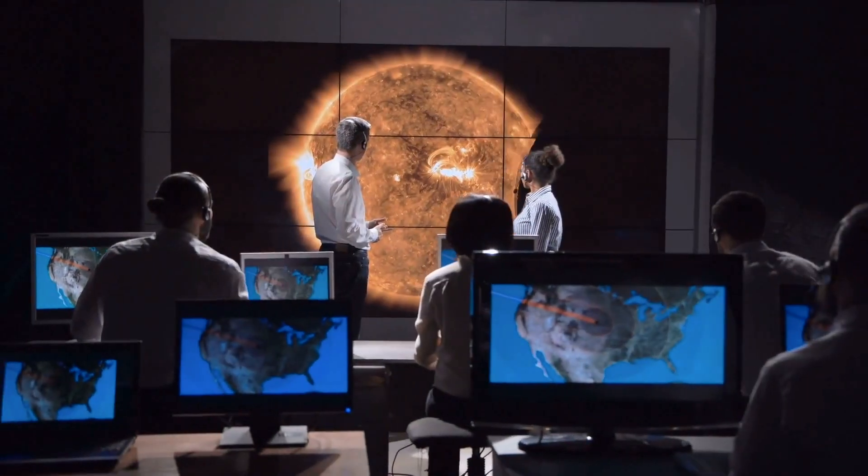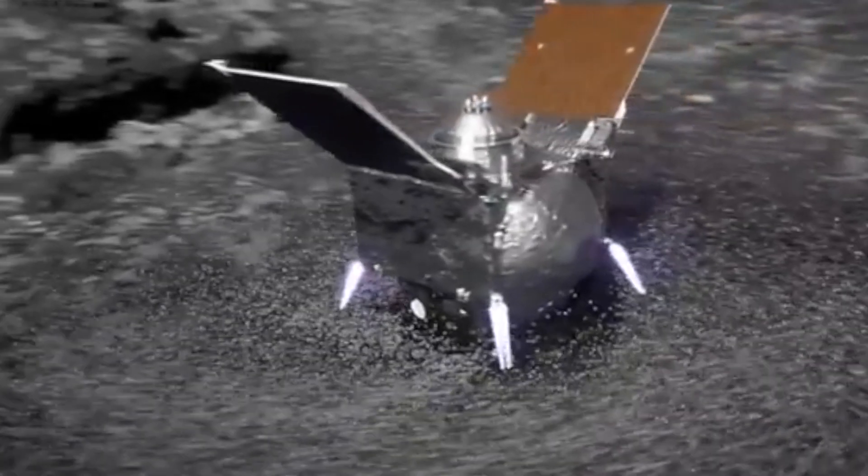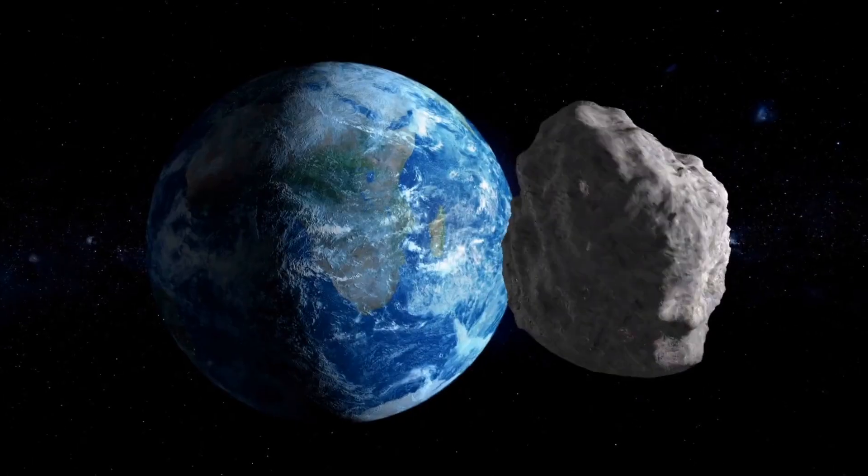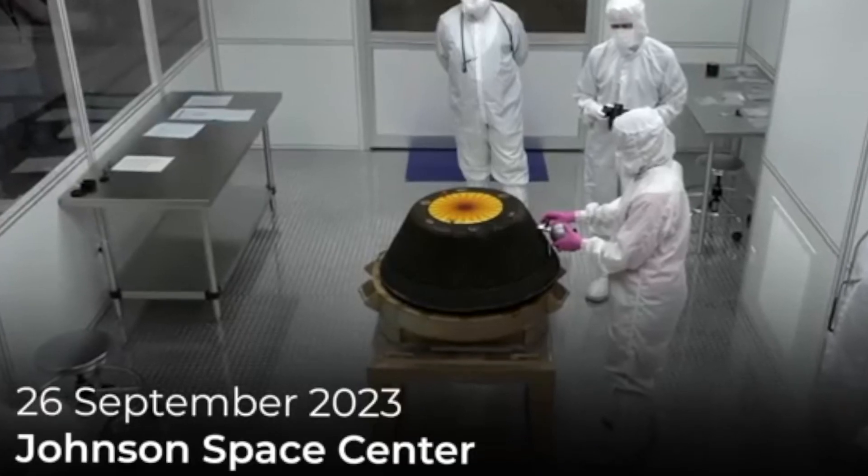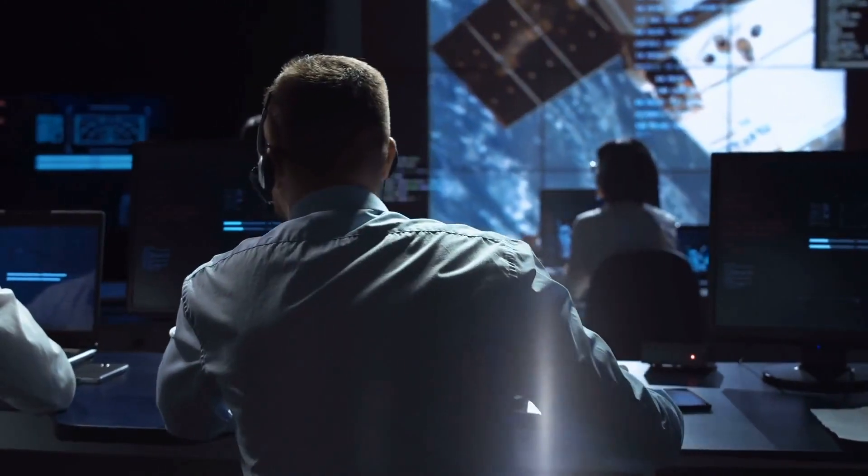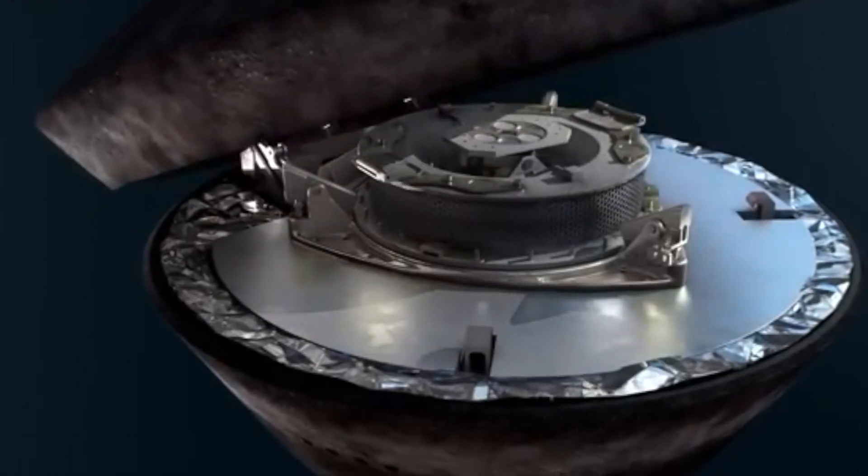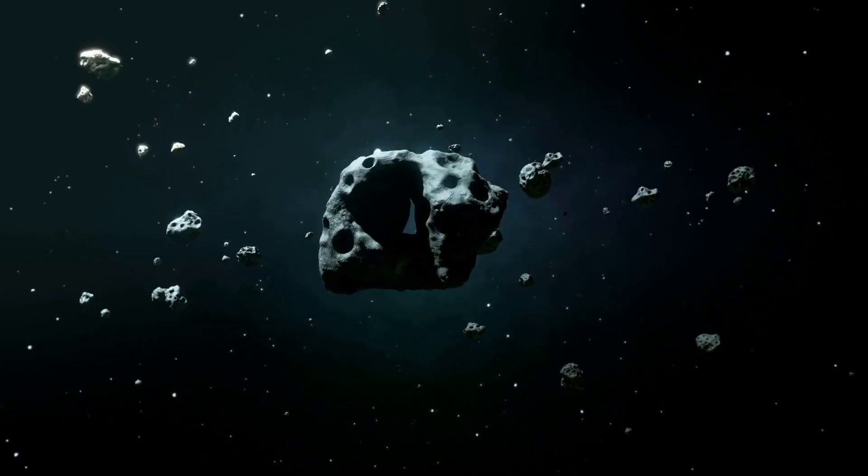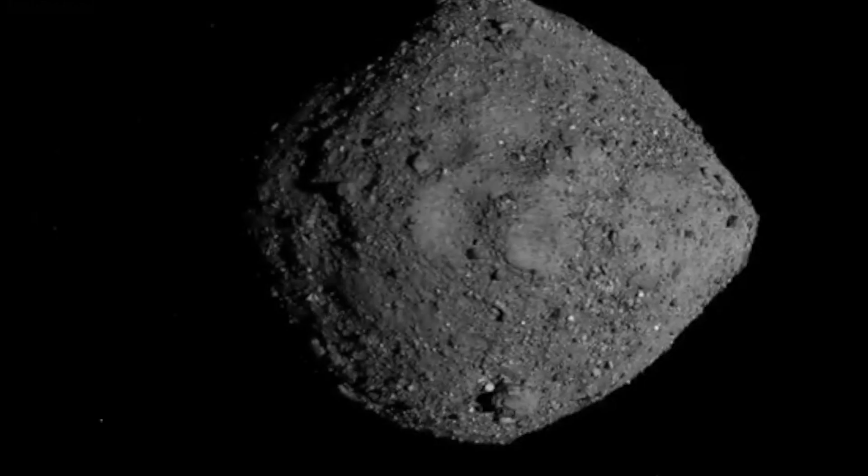NASA has successfully unlocked the space capsule housing the largest ever collection of asteroid samples obtained during a space mission. These valuable samples were retrieved from Bennu, an asteroid with potential hazards, and they offer a unique glimpse into the early solar system. On September 26, 2023, scientists at NASA's Johnson Space Center in Houston made a pivotal discovery when they opened the sample return canister from the OSIRIS-REx mission. This mission had returned to Earth just two days earlier, bringing back a sample from the asteroid Bennu.